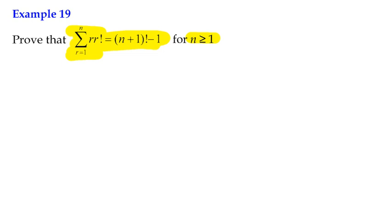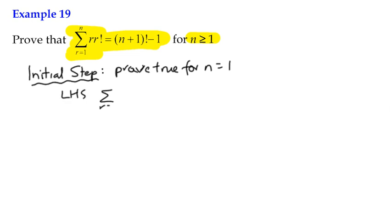First of all, we want to have an initial statement showing that it's true for the smallest value of n. So initial step: prove true for n=1. Let's do that. We take the left-hand side, which is the sum of all the terms from r=1 to 1 of r times r factorial, which of course is just, we substitute 1 in there, 1 times 1 factorial, which gives us the answer 1.